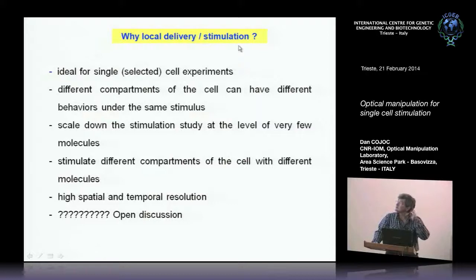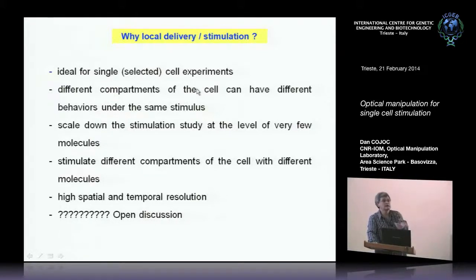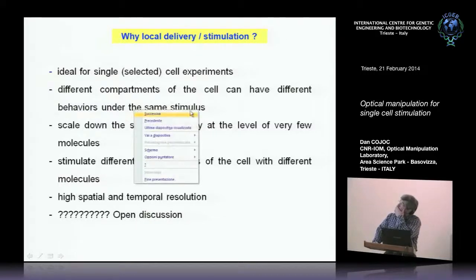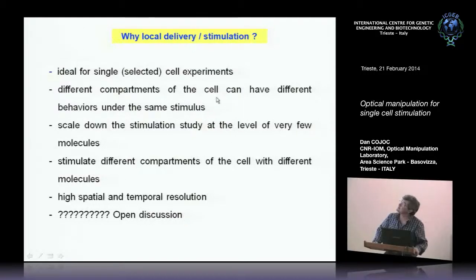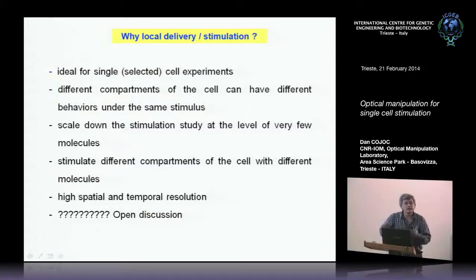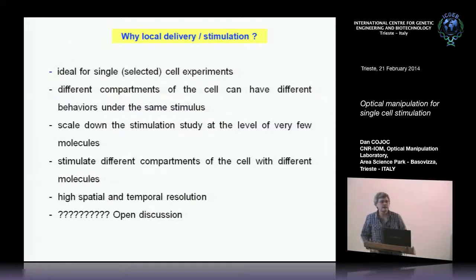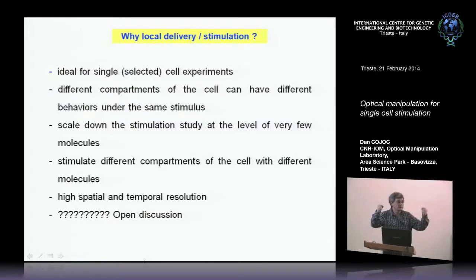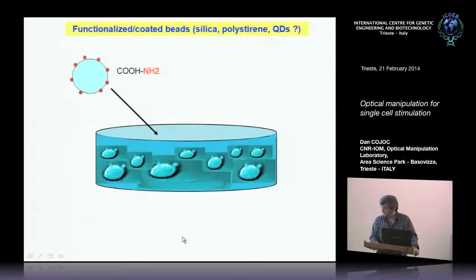Why use local delivery stimulation? It is very good for selected cell experiments — I select exactly which cell I want to work with, unlike bulk stimulation. Different compartments of the cell can have different behaviors under the same stimulus, at least for neurons. We can scale down the number of molecules used, beginning to understand how many molecules are necessary for a certain stimulation. We can stimulate different compartments with different molecules simultaneously — for example a chemoattractant and a chemorepellant — and we have high spatial and temporal resolution.